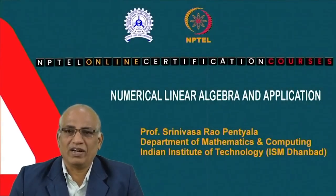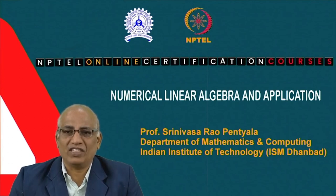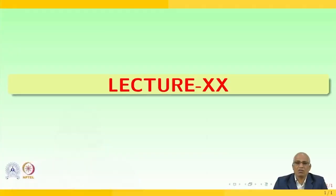Welcome to the course on Numerical Linear Algebra and Applications. Today we are going to have the 20th lecture. Before going to the next contents, let us quickly recall what we did in the last lecture. We were doing Gauss elimination with partial pivoting, Gauss elimination with complete pivoting, and the stability of the systems — how the solution would be affected and how you could draw the best approximation.